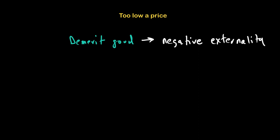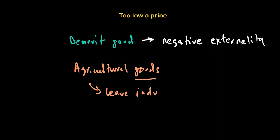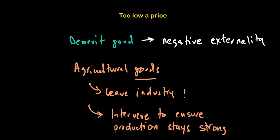Similarly, when price is too low for some goods — like agricultural goods — that can also be a problem, because if the price is too low, it may discourage producers or farmers and result in them leaving the industry. If they leave the industry, the quantity of this good gets affected. Governments often support sectors like agriculture to ensure production remains strong and to incentivize farmers to stay in business. These are the three reasons why we want government to intervene: when price is too low, when price is too high, and when price is fluctuating too much. In the next discussion, we'll talk about how governments intervene when these problems arise.